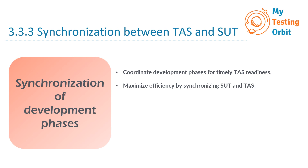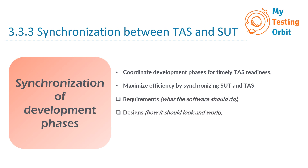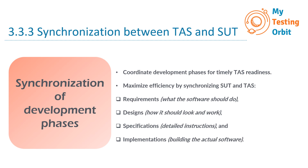Next, we have maximizing efficiency by synchronizing SUT and TAS. To do this efficiently, we want everything related to our SUT and TAS to be synchronized — that means making sure that the requirements, designs, specifications, and implementations all match up. It's like having a well-coordinated team where everyone knows their role and timing. So synchronization of development phases is about ensuring that our TAS is ready to test our SUT whenever we need it, most efficiently when everything is in harmony from requirements to implementation.